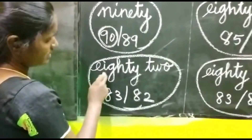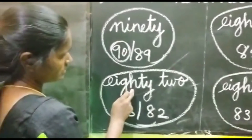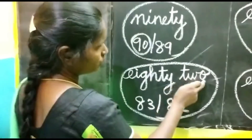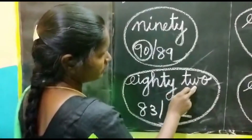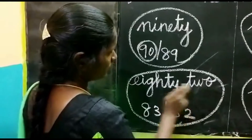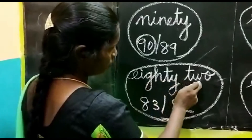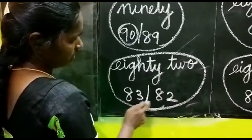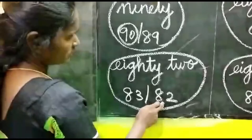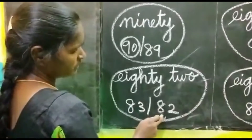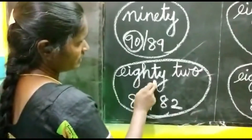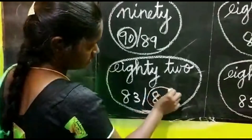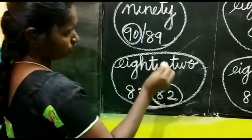E-I-G-H-T-Y. 82. T-W-O. 2. 82. Okay. Here, two numbers are given: 83 and 82. Which one is the correct spelling for this? 82. So, 82 is the answer. Circle the 82.